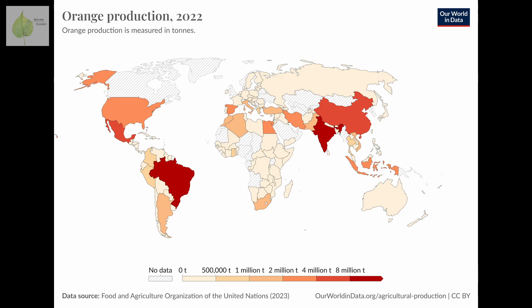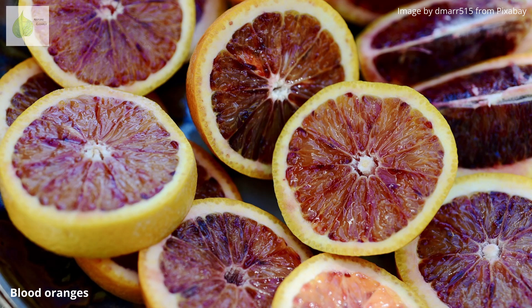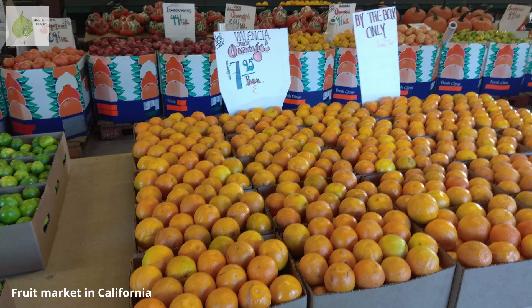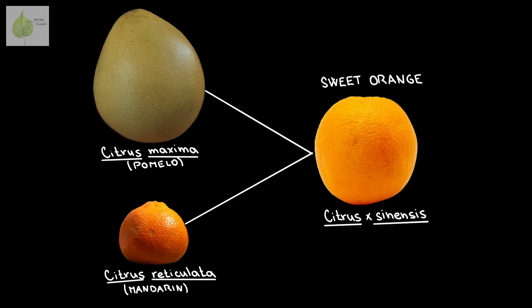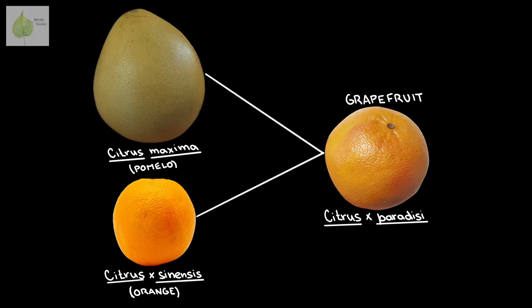So let's look at some of the popular citrus fruits and learn where they came from. Oranges account for the majority of citrus production worldwide. Blood oranges, navel oranges and Valencia oranges are probably the most well-known of the many orange cultivars and varieties available on the market. Orange, Citrus × sinensis, is a hybrid between two of our core species: pomelo, Citrus maxima, and mandarin, Citrus reticulata. Orange crossed with pomelo gave rise to grapefruit, Citrus × paradisi.